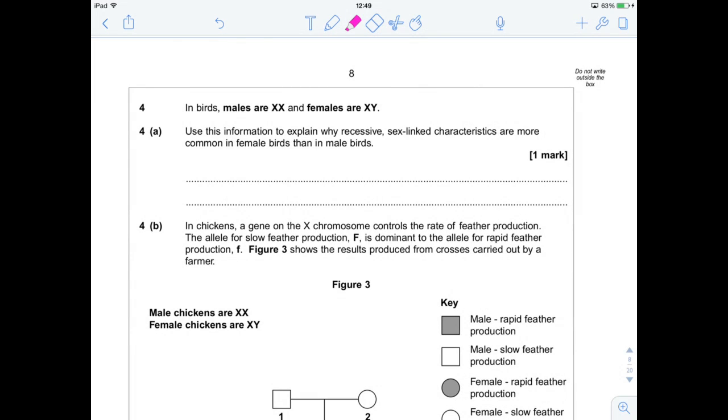Hi guys, Mr Pollock Biology here with question 4 from June 2014's Unit 4 biology paper, Populations and Environment. This is a sex-linked characteristics question along with a nice little bit of genetic crosses and a bit of Hardy-Weinberg.